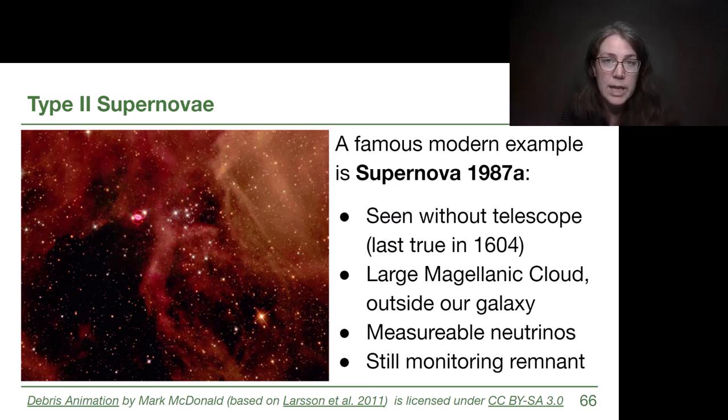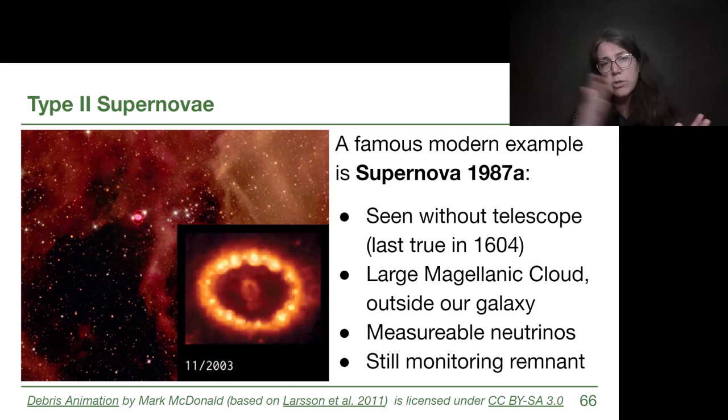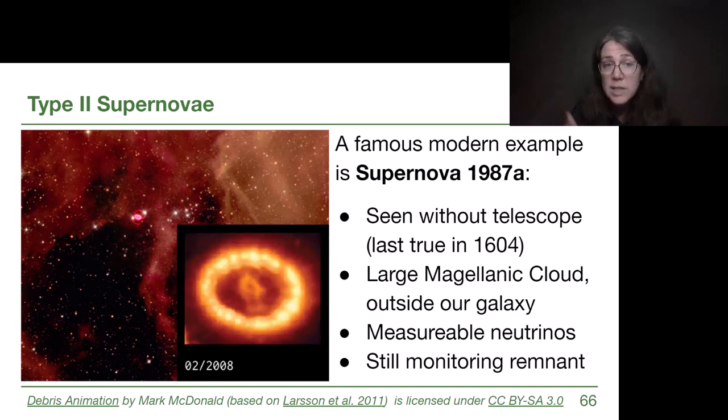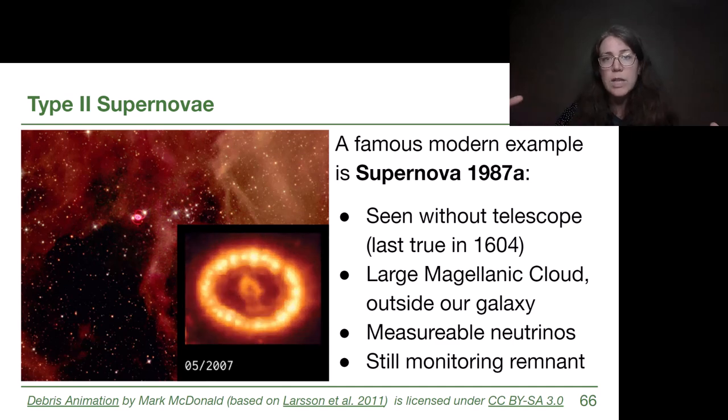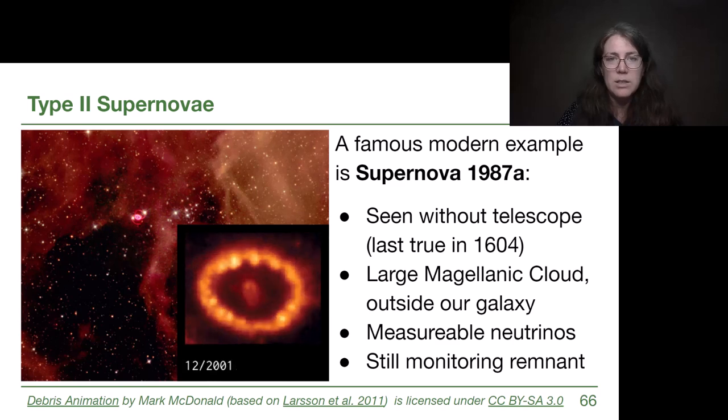One of the interesting things about Supernova 1987A was it was so powerful and so well studied right from the beginning that we were able to measure neutrinos and link them to that specific event. Our neutrino telescopes that normally study the Sun were able to detect the anomaly that was consistent with that supernova. And we're still monitoring the remnant today. This animation shows about a decade worth of data, but it continues to be something where we can see changes from one year to the next as the explosion continues outward through the gas and dust in the surrounding area. Kind of neat to realize that even these large-scale astronomical things, there are still moments that we can observe in humanity and it's exciting to be part of those moments.